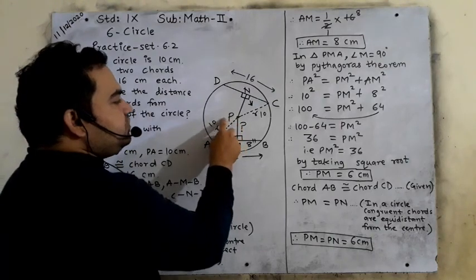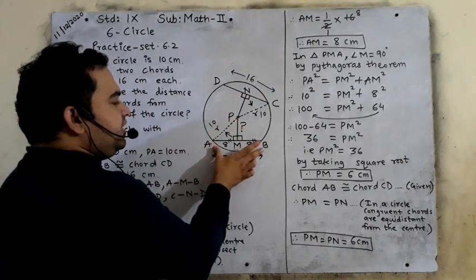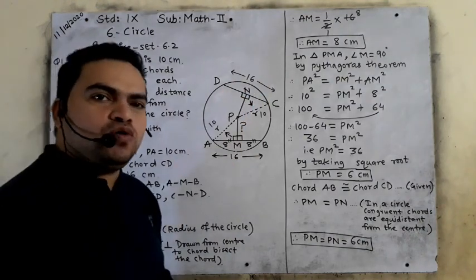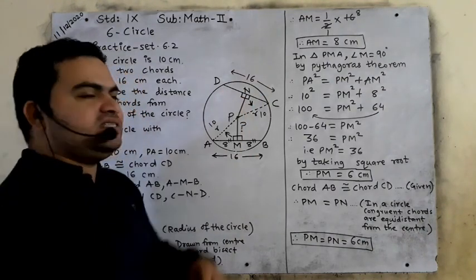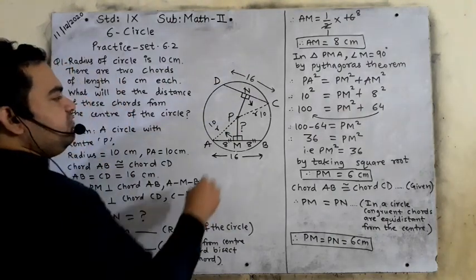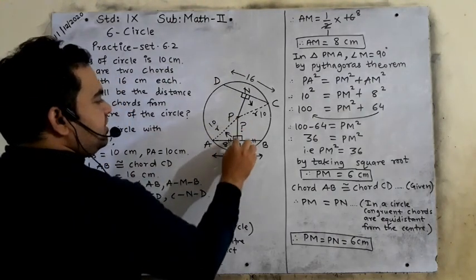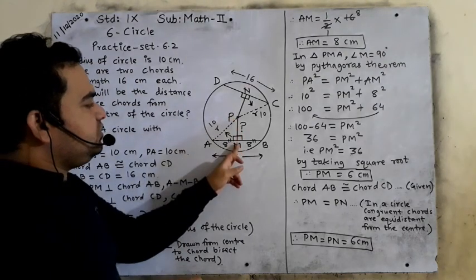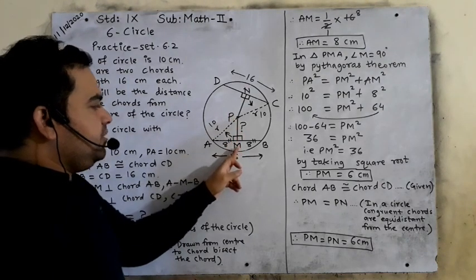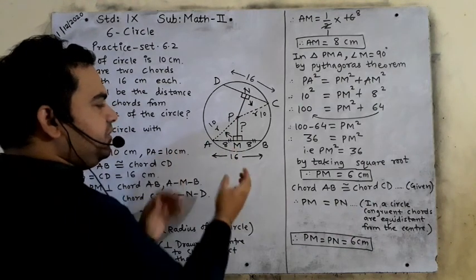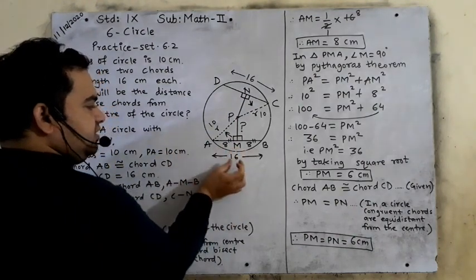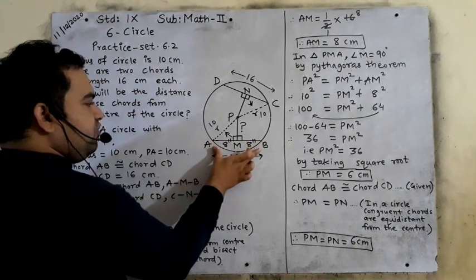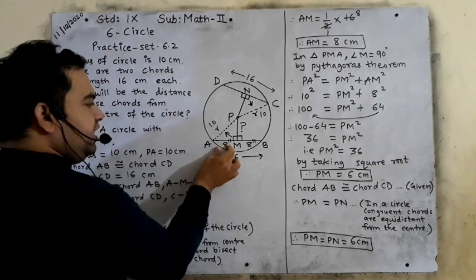Point P is the center of the circle. Segment AB is the chord and segment CD is the chord. Segment AB and segment CD are congruent — 16 cm each. We construct the perpendicular PM from center to chord. PM will divide segment AB into two equal parts. AM is half of AB, so half of 16 is 8.